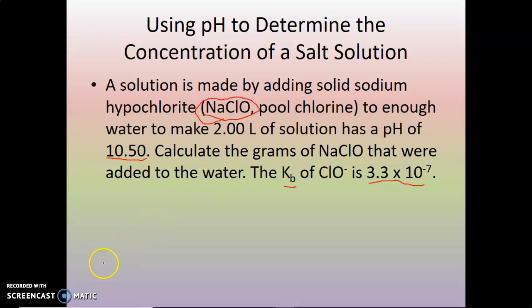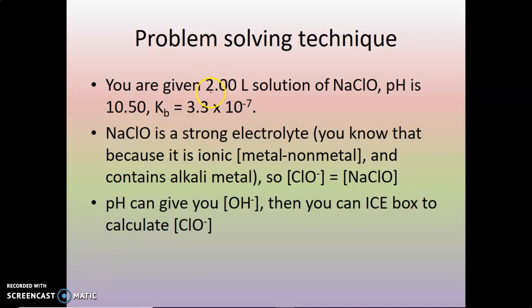Sodium hypochlorite is a strong electrolyte — it's ionic, made of metals and non-metals, and sodium as the cation means all alkaline metal salts are soluble. From the pH of 10.50, you get pOH = 14 − 10.5 = 3.5. Then 10 to the −3.5 — the opposite of the negative log, using the second log button (10^x) on your calculator — gives you a hydroxide concentration of 3.2 times 10 to the minus 4 M at equilibrium. Using the ICE table, you can icebox backwards to calculate the initial concentration of hypochlorite ion.